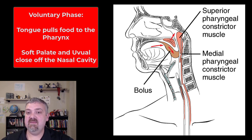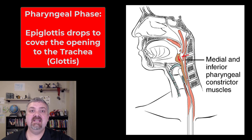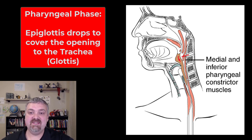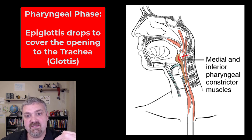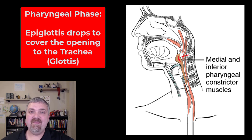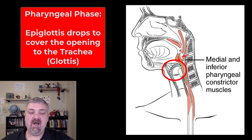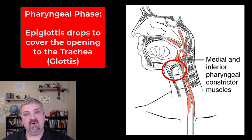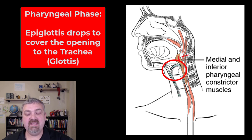The next two phases are going to be involuntary. Here we see the pharyngeal phase. Notice that the uvula and soft palate are still flipped up to make sure the food or drink can't go out your nose. If you've ever had that happen, you know it can be very painful. You also notice down here now that the epiglottis has flipped over, flipped down to cover the glottis — the opening to the trachea.